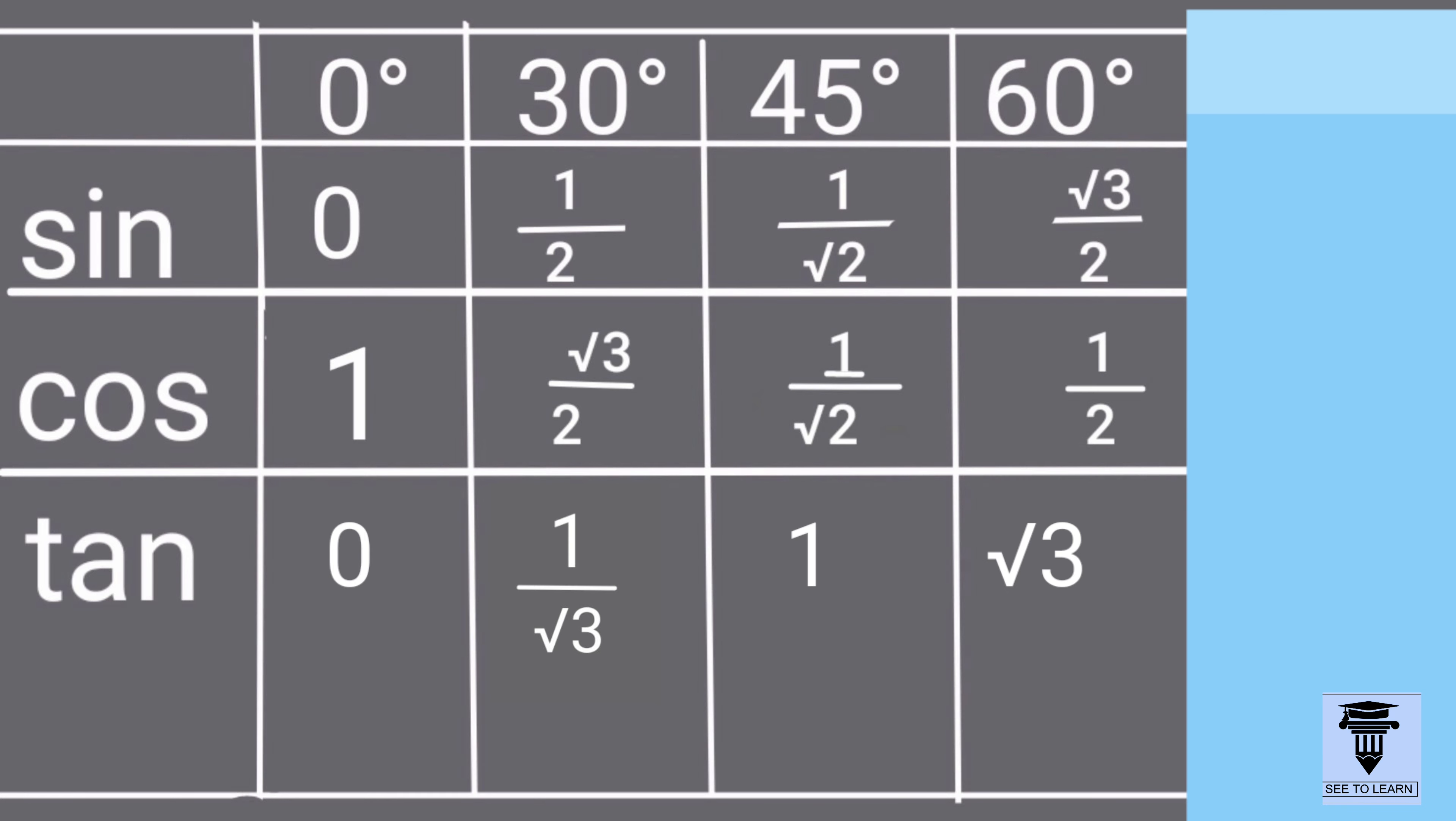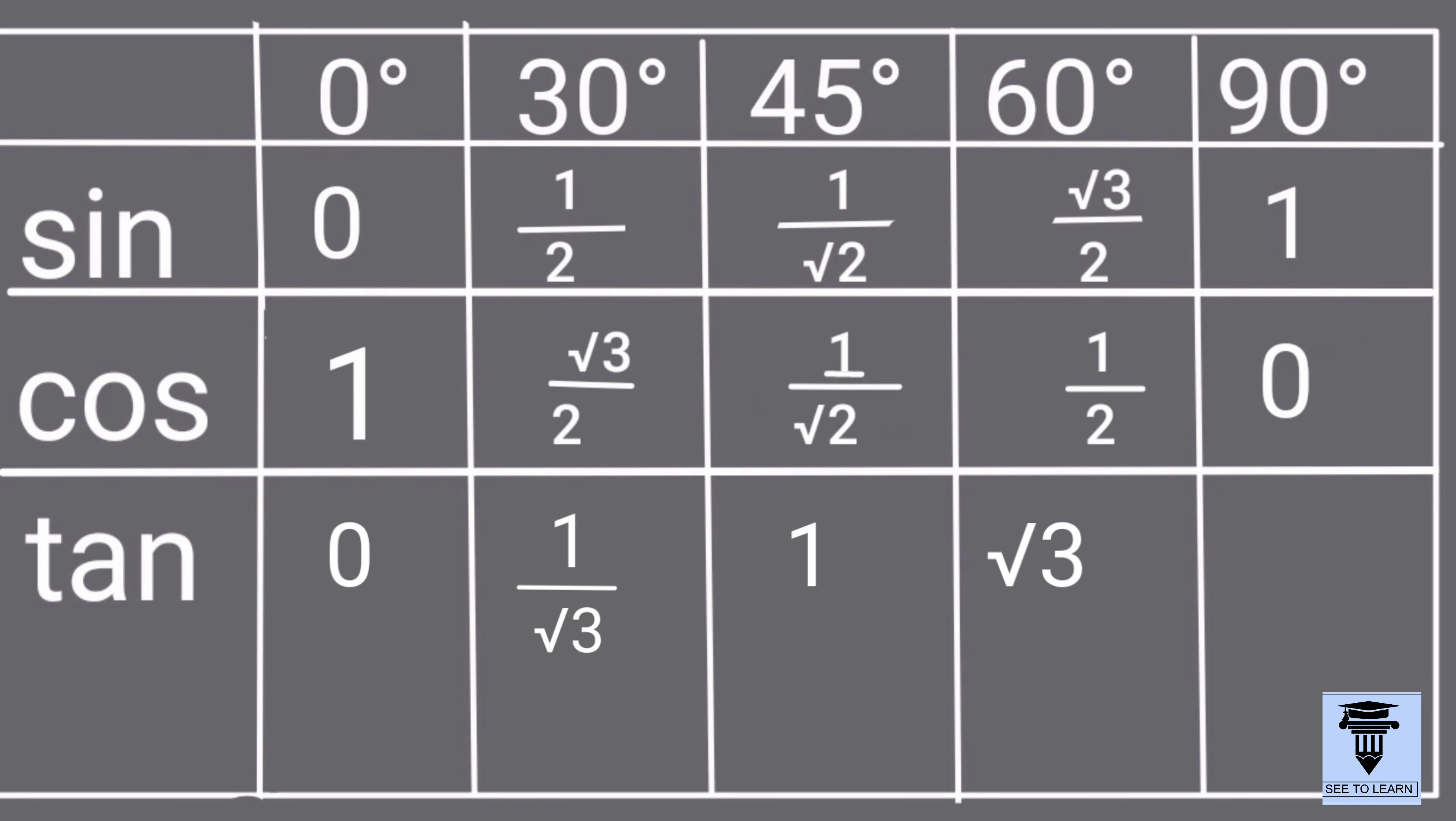In a similar way, we calculate tan 45 and tan 60 ratios as 1 and root 3 respectively. Now, tan 90 is equal to 1 upon 0. Can we divide a number by 0? No. So, we write it as not defined.